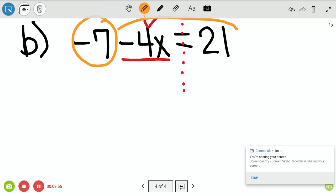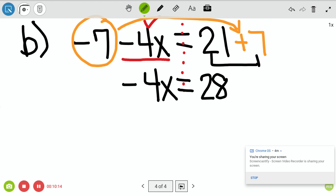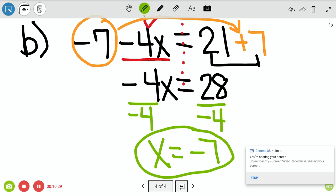So in order to move it over, we make it a positive 7. So our next step, we combine and divide. So we're going to combine those two together. 21 plus 7 gives me 28. And then my last step is to divide. This time, the number that's attached to x is negative 4. So I want to divide negative 4 over. And then we're going to follow our rules. A positive 28 divided by a negative 4 is a negative 7. And there you have it.